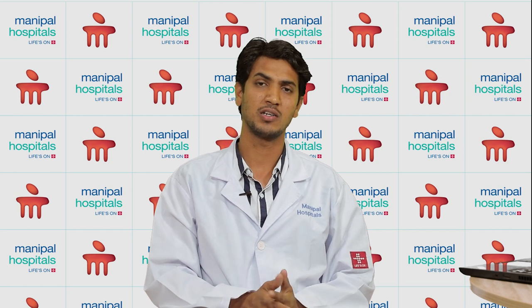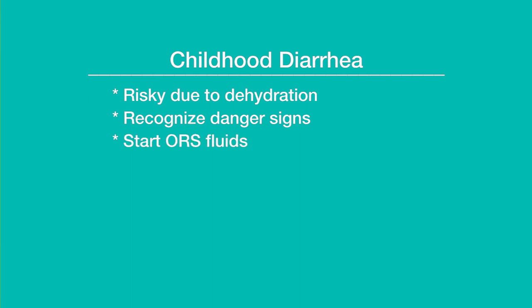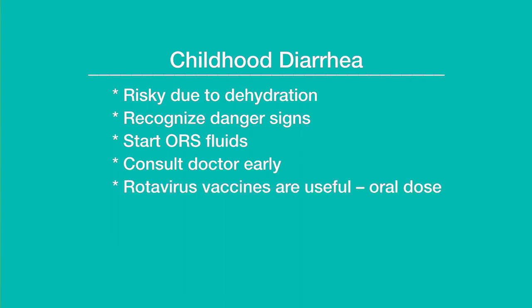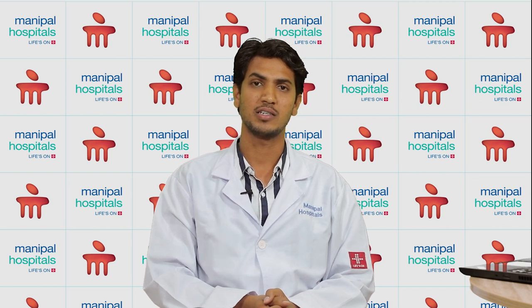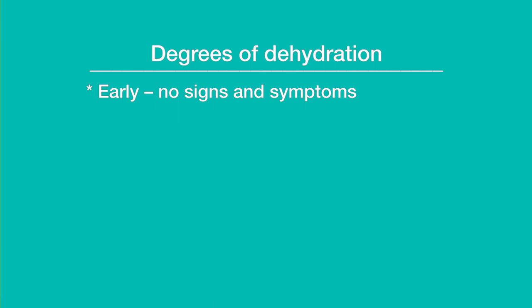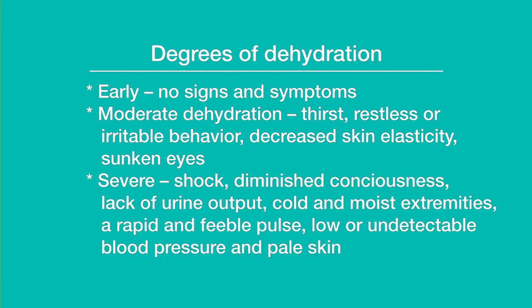Diarrhea is mainly risky in children because of the higher risk of dehydration. Multiple loose stool episodes cause early water loss in children, and various degrees of dehydration can occur. Children usually require early consultation with a doctor. Dehydration is categorized into three levels: early dehydration may show no signs or symptoms; moderate dehydration presents with dryness of mouth, increased thirst, and restlessness; and severe dehydration can cause diminished consciousness, low blood pressure, and decreased urine output.